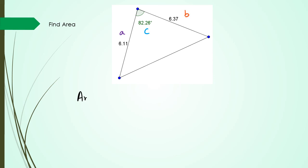So in terms of area, it's still going to be half AB sine C. So we're going to have half times 6.11 times 6.37 times sine of 82.26. Which means my area is equal to 19.28 units squared.